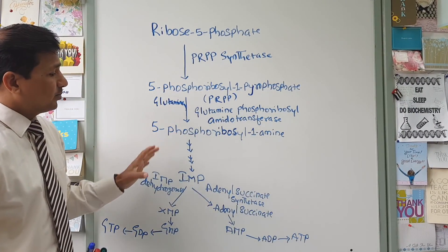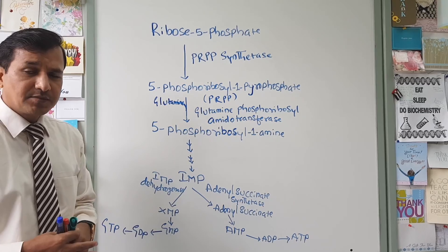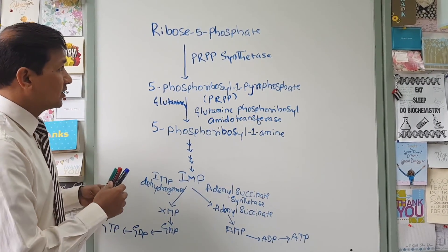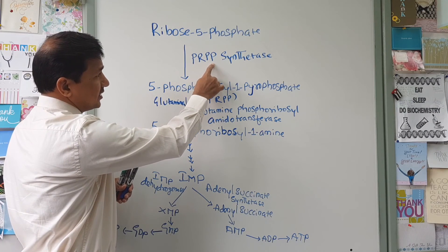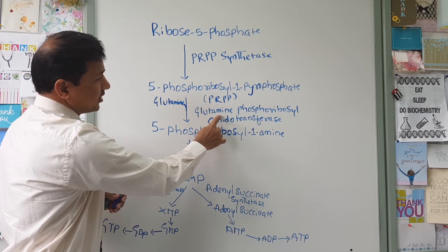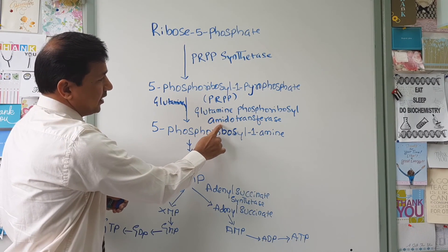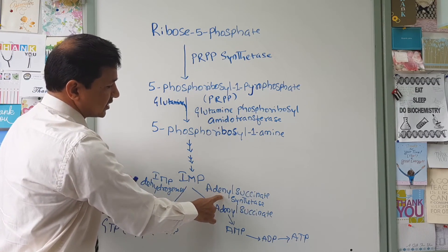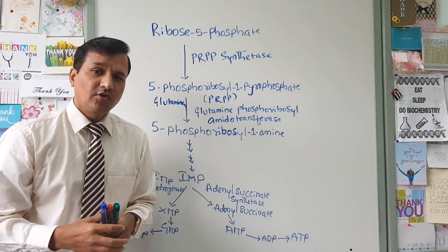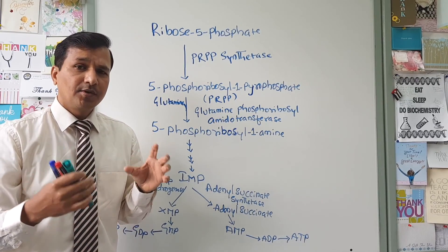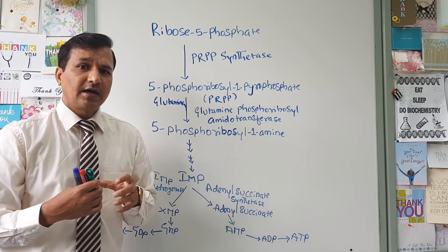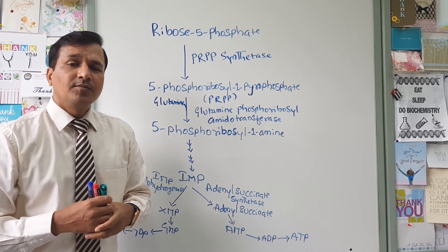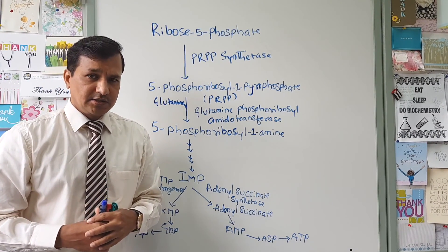There are 4 important enzymes in purine nucleotide biosynthesis: PRPP synthetase, glutamine phosphoribosyl amidotransferase, IMP dehydrogenase, and adenylosuccinate synthetase. These are the 4 key enzymes that are regulated in purine nucleotide biosynthesis.